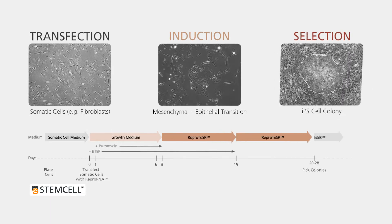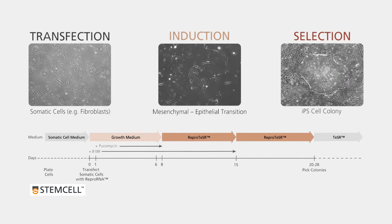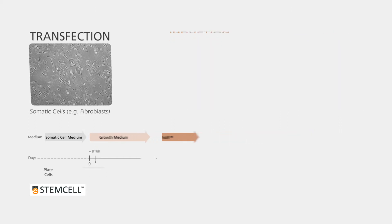Over the next several weeks, IPS cell colonies will begin to form. When reprogramming fibroblasts, the cells will change shape, appearing more rounded as the mesenchymal to epithelial transition occurs.